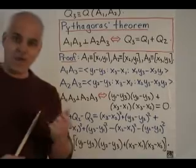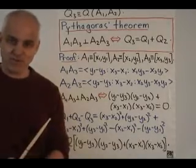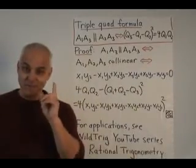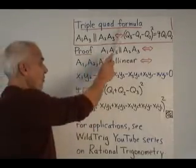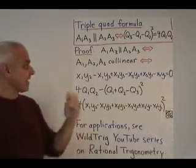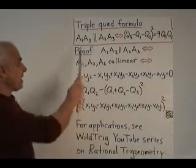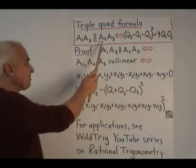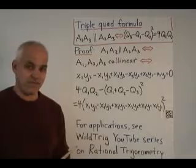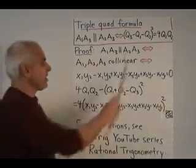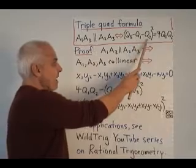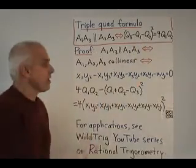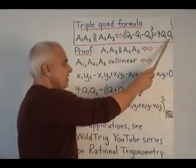Now let's have a look at the other crucial and important result. Okay, so here is the second most important theorem in mathematics. It's called the triple-quad formula. And using exactly the same notation as we've had, the line a1, a3 is parallel to the line a2, a3, precisely when this relation holds. q3 minus q1 minus q2 all squared equals 4 times q1 times q2.